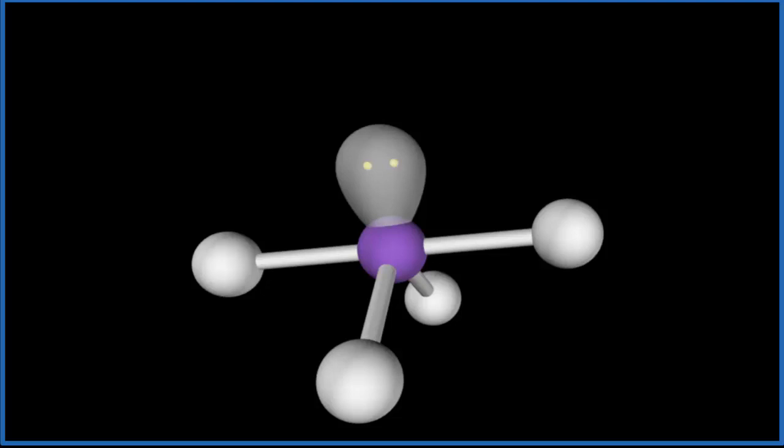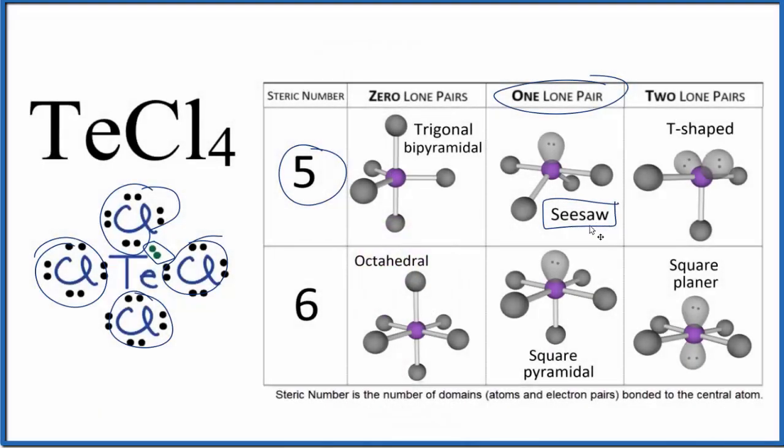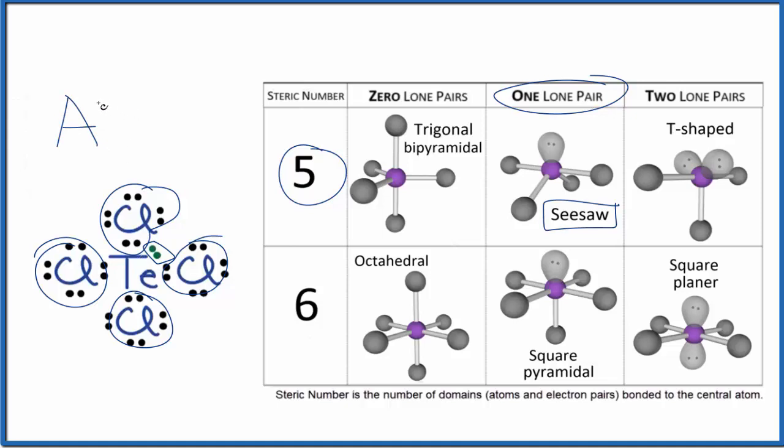Let's go back to our Lewis structure. So we have our seesaw molecular geometry for TeCl4. We could also use the AXE notation to figure out the molecular geometry. Let's do that up here. A, that's the central atom. That's the Te. X, that's the number of chlorine atoms. One, two, three, four. E, that's the number of lone pairs. We have one. So for AX4E1, if you look that up on a table of molecular geometries, that's going to be seesaw, just like we found before.